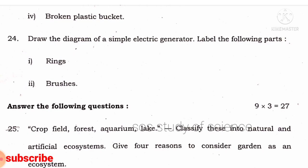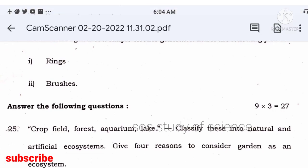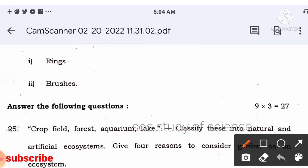Question 24 asks you to draw a diagram of a simple electric generator — worth two or three marks. I have already told you they may ask about either an electric generator or an electric motor, so prepare both concepts.